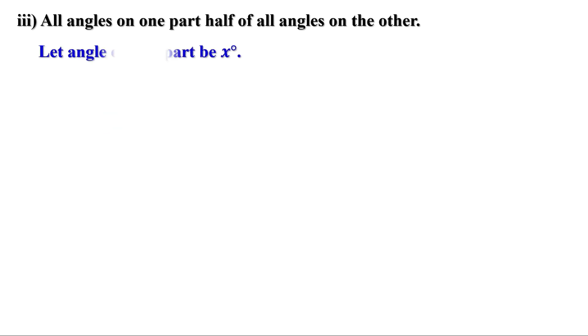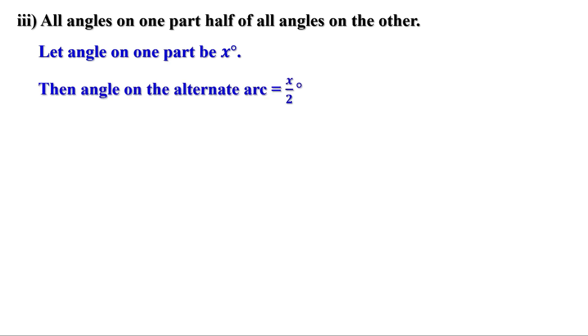Part three: all angles on one part are half of all angles on the other. Let the angle on one part be x degrees. Then the angle on the other part, or angle on the alternate arc, is x divided by 2 degrees. We know the sum of angles on one part and on its alternate arc is 180 degrees. Therefore, x plus x by 2 equals 180 degrees, which gives 3x by 2 equals 180 degrees.